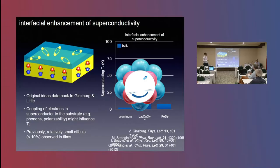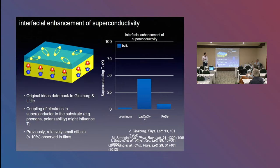The motivation for this work really dates back to early ideas by Ginsburg and Little, who suggested that you could, in principle, realize some kind of interfacial enhancement of superconductivity by coupling a thin film of a superconductor onto the polarizability of some kind of substrate.